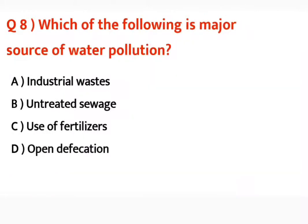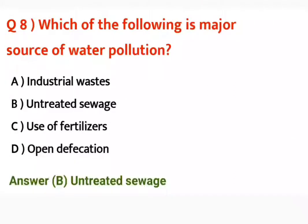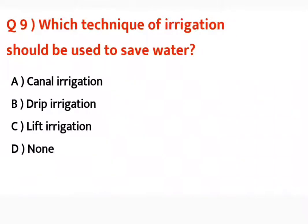Question number eight: Which of the following is a major source of water pollution? Water pollution kis se zyada hota hai? Correct answer is untreated sewage. Ghar se jo ganda pani nikalta hai, us se zyada water pollution hota hai.